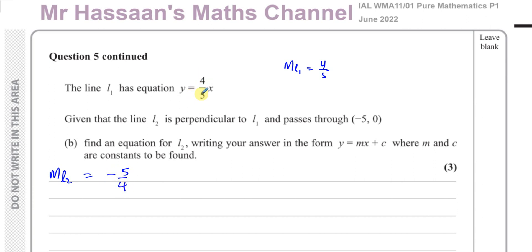So you take the gradient, which is 4 fifths, and you turn it upside down and change the sign. That's the gradient of line L2. And we know that line L2 passes through the point negative 5, 0.